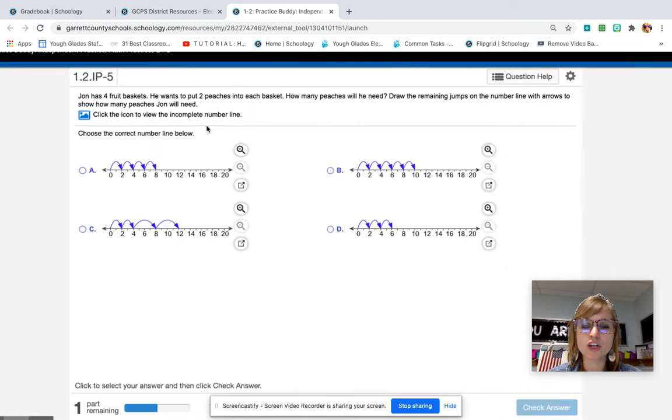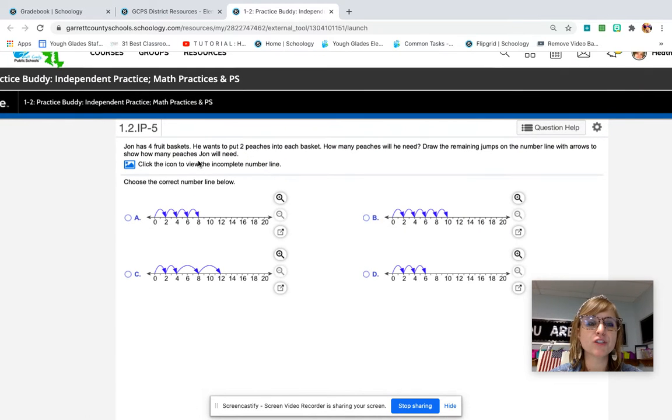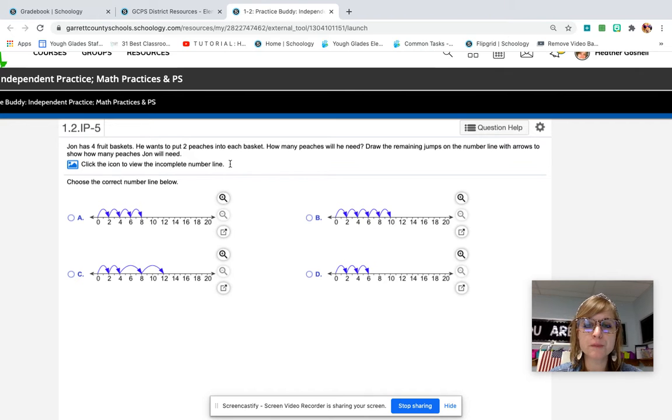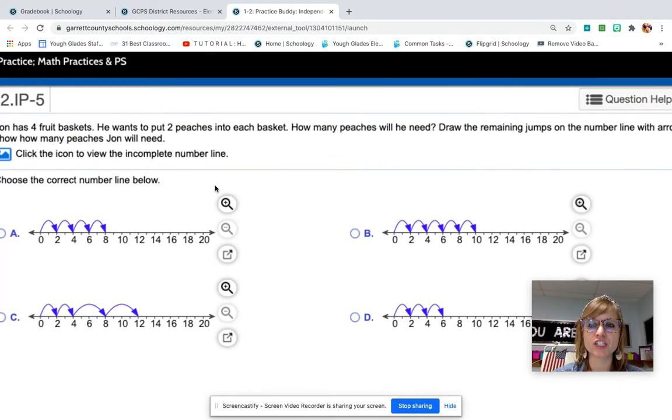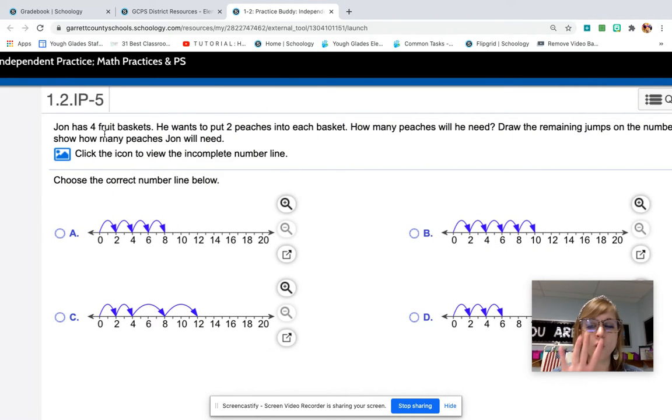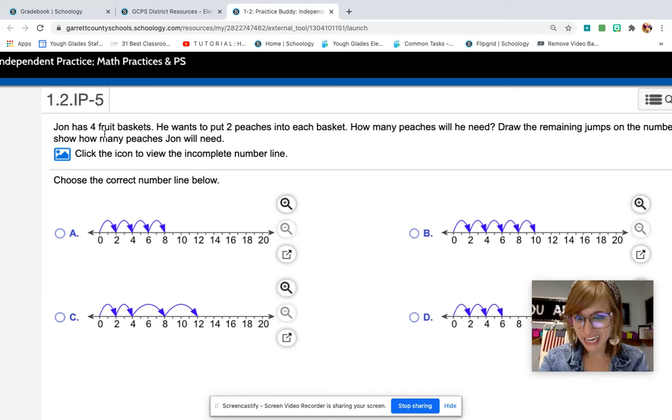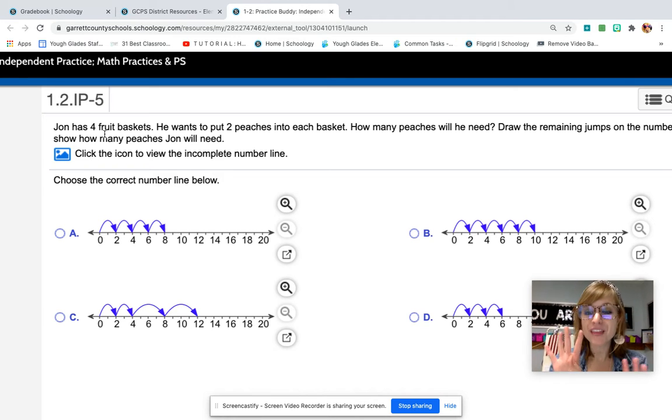So let's take a closer look at this problem. First of all, we need to know how many groups we have here. So if we're looking at the question, it says John has four fruit baskets, and he wants to put two peaches in each basket. So how many groups does he have? Well, if you think four, you are correct. He has four groups.